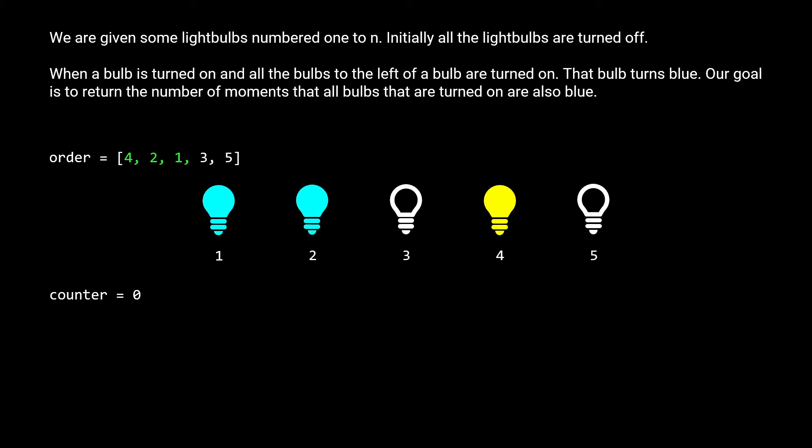When all the bulbs to the left of a bulb are turned on, that bulb's light changes to blue. So for bulb number 2, the only bulb to the left is bulb 1. Bulb 1 is turned on, so bulb 2 turns blue. For bulb 1, there aren't any bulbs to the left, so it also turns blue. Despite all this, we don't increment our counter because all the bulbs that are turned on must be blue — bulb 4 is turned on but not blue yet, so our counter stays the same.